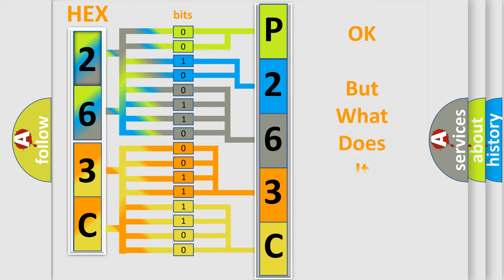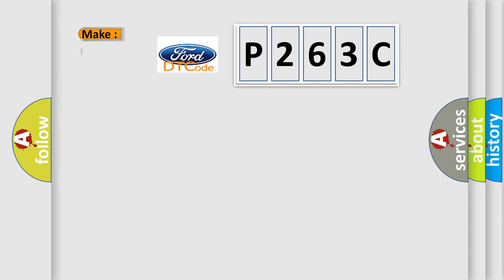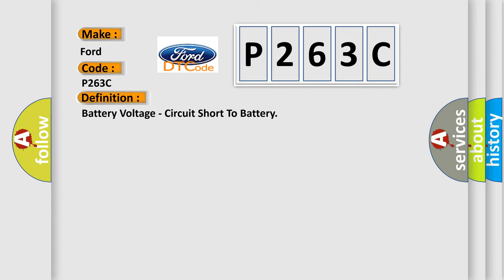The number itself does not make sense to us if we cannot assign information about what it actually expresses. So, what does the diagnostic trouble code P263C interpret specifically? For Infiniti car manufacturers, the basic definition is: Battery voltage, circuit short to battery.